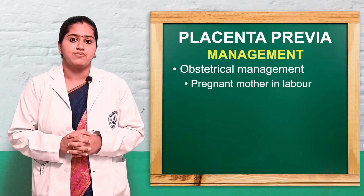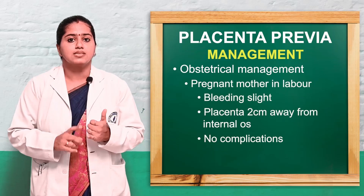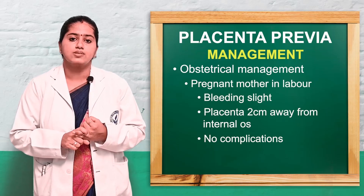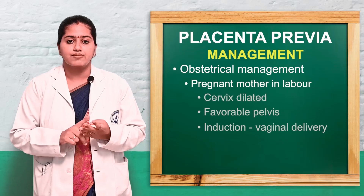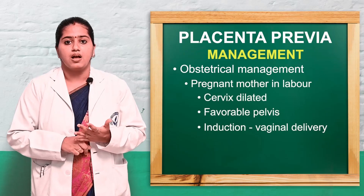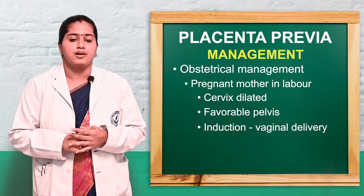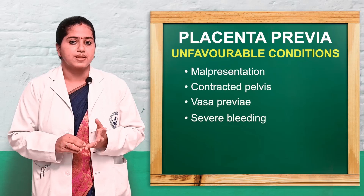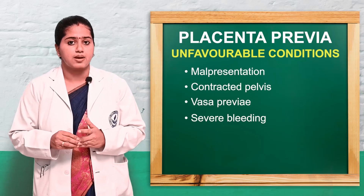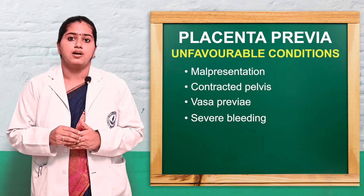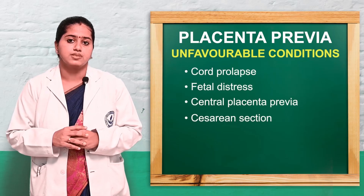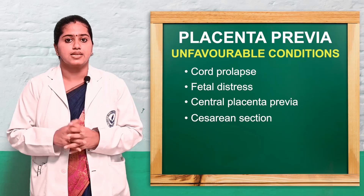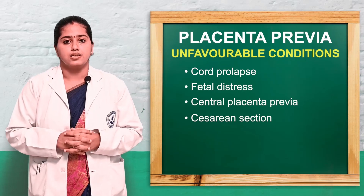If the mother is in labor with slight bleeding, the placenta is 2 cm away from the internal os, no complications, dilated cervix, favorable pelvis, artificial rupture of membranes and oxytocin can be used for vaginal delivery. If there are unfavorable conditions — malpresentation, contracted pelvis, vasa previa, severe bleeding, shock, fetal distress, or cord prolapse — caesarean section is performed.